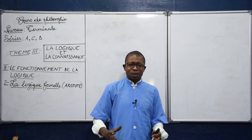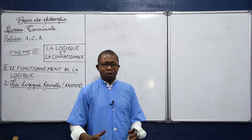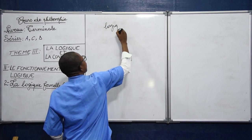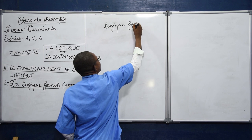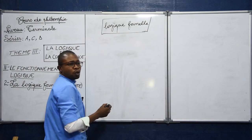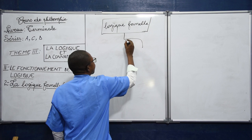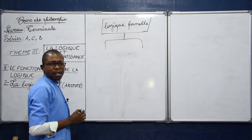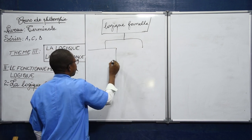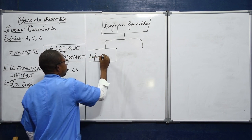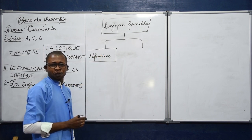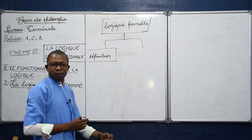La logique formelle présente deux aspects. Le premier aspect, il s'agit de sa définition. Et le deuxième aspect de la logique formelle que nous allons étudier tout à l'heure, ce sont ses principes.